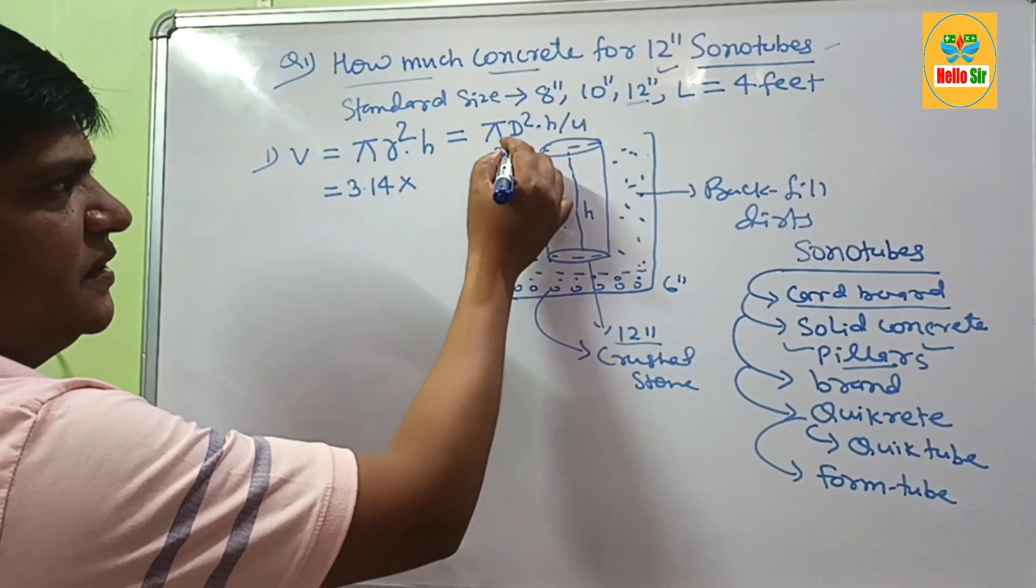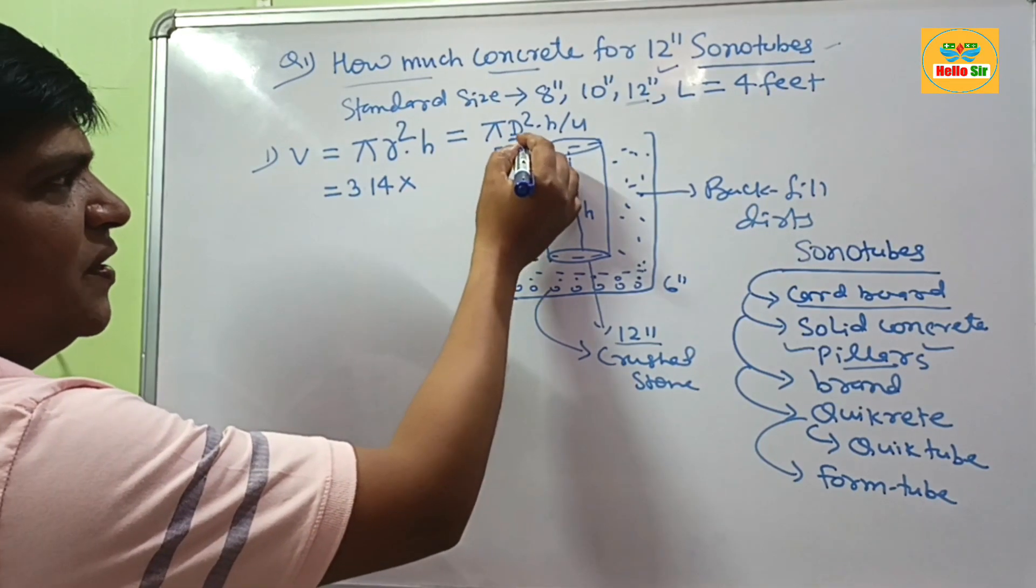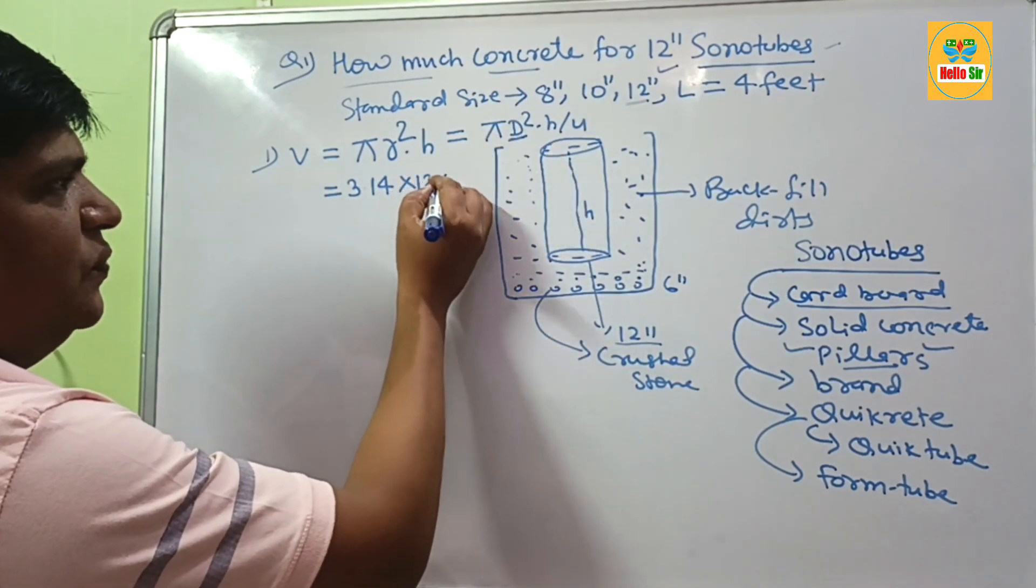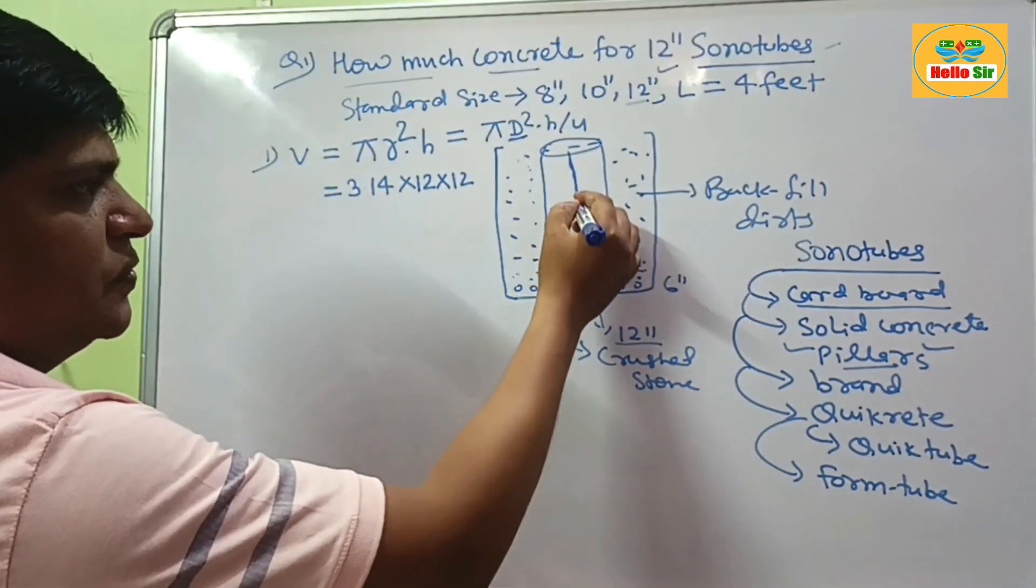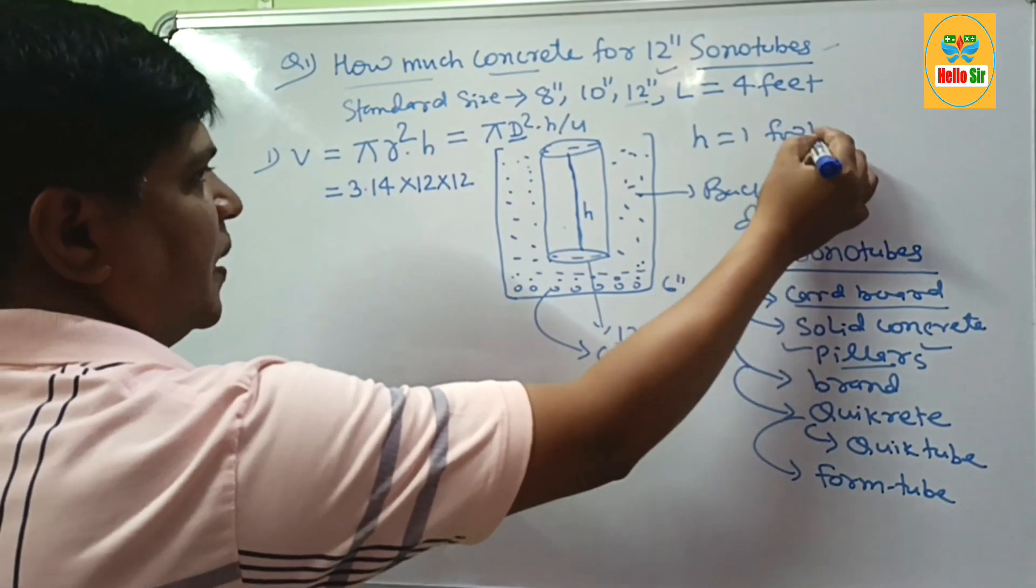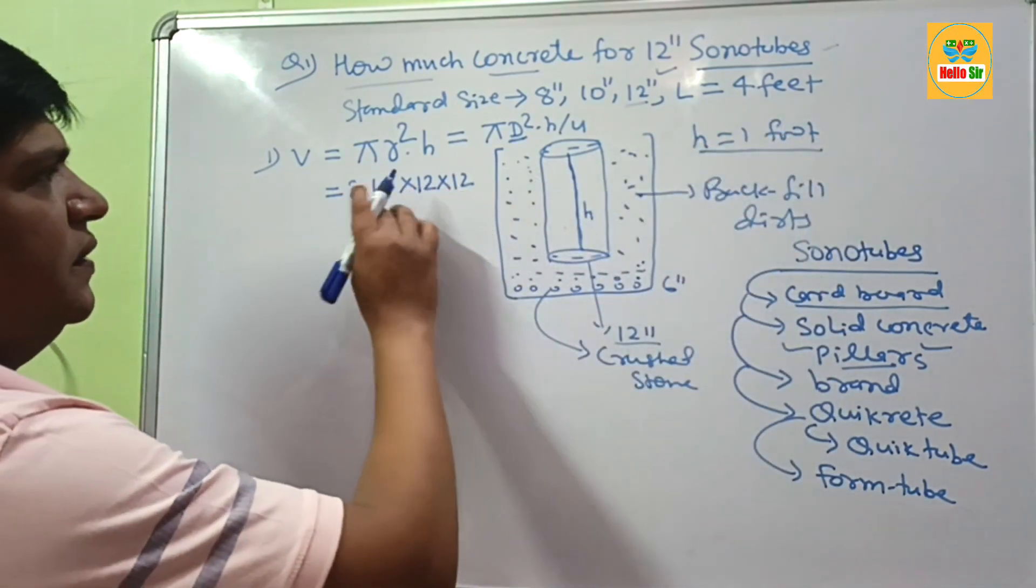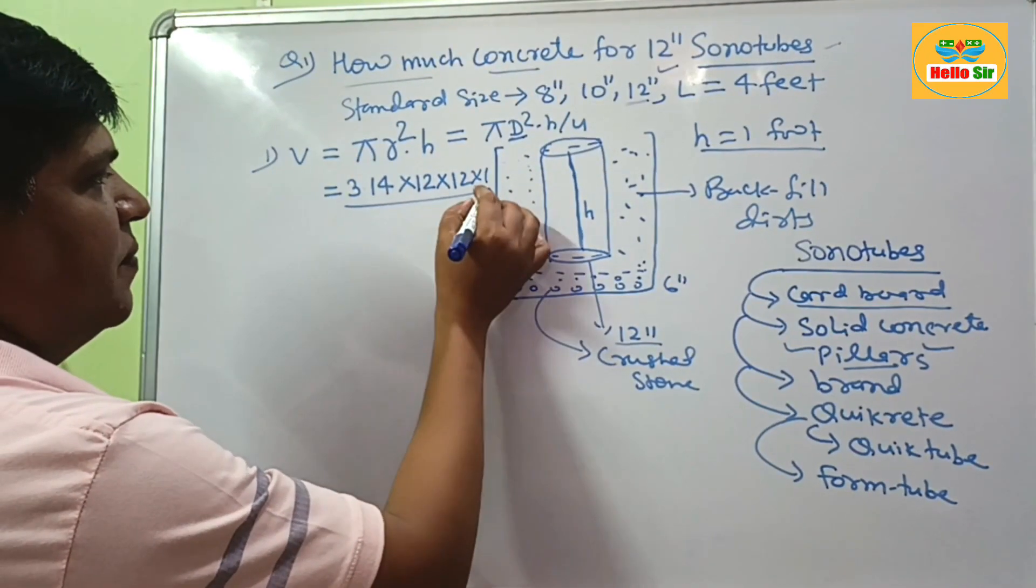If d is diameter and r is radius. If you are using diameter, 12 into 12. And if the height of your sonotubes is 1 foot, you want to calculate for only 1 foot. This can multiply by 1 and divide by 4.